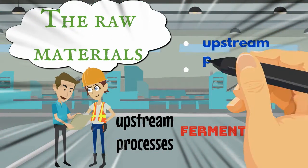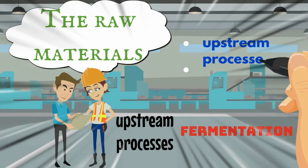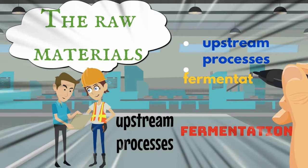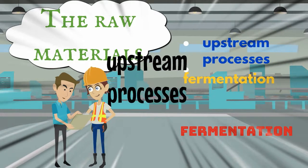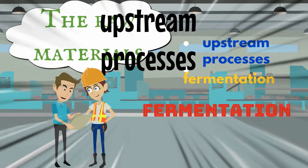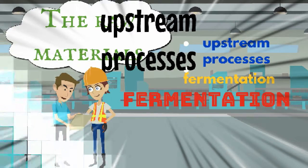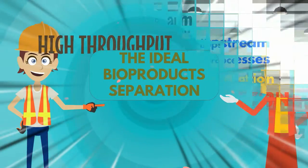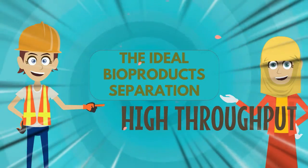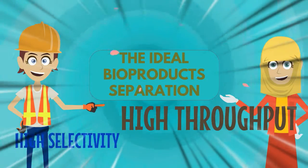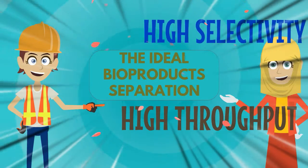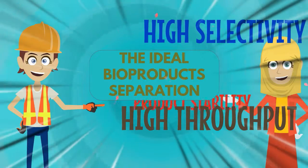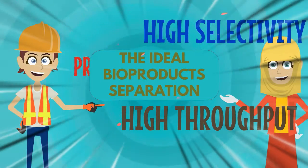Raw materials for bio-separation, mostly from the upstream process, are known as fermentation broth. The ideal bioproduct separation should combine high throughput and high selectivity, and should ensure the stability of the product.